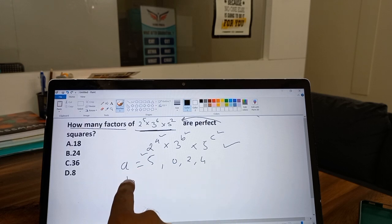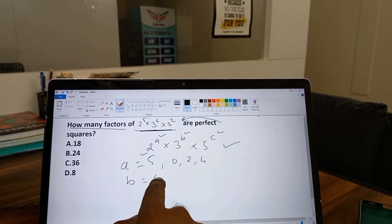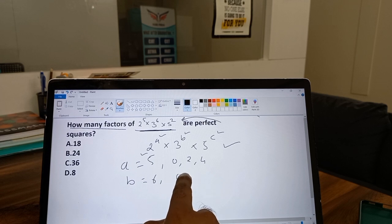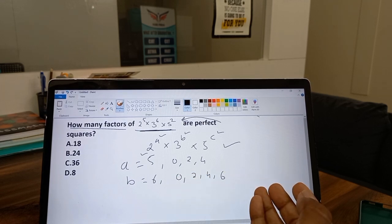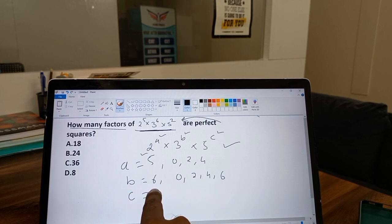In case of b, we have b equal to 6. Till 6 or among 6, it can take possible even values: 0, 2, 4, and of course 6.